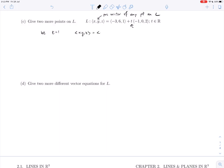Let's let t equal 1. If we do, then we get the position vector (x, y, z) = (-3, 6, 1) + 1(-1, 0, 2). That gives me the position vector (-4, 6, 3), which means the point (-4, 6, 3) is on L.